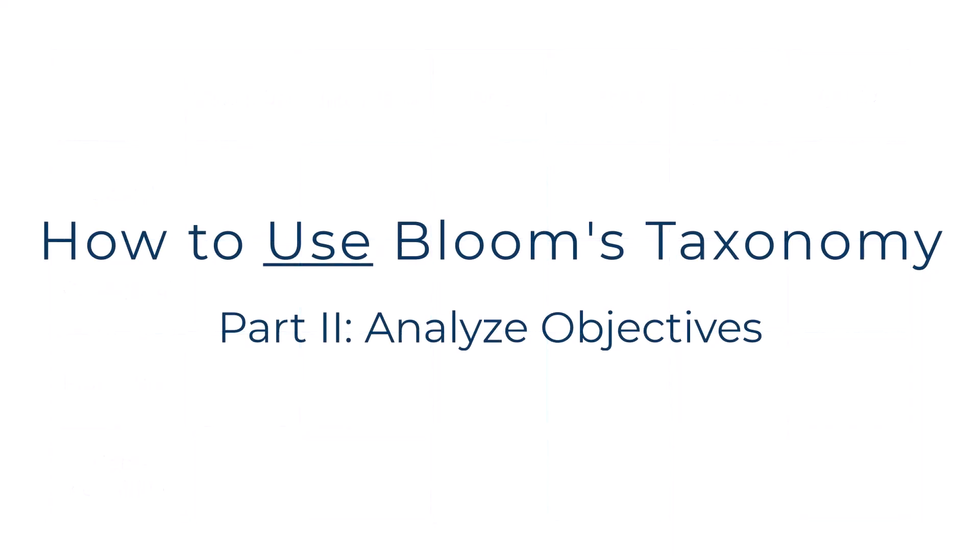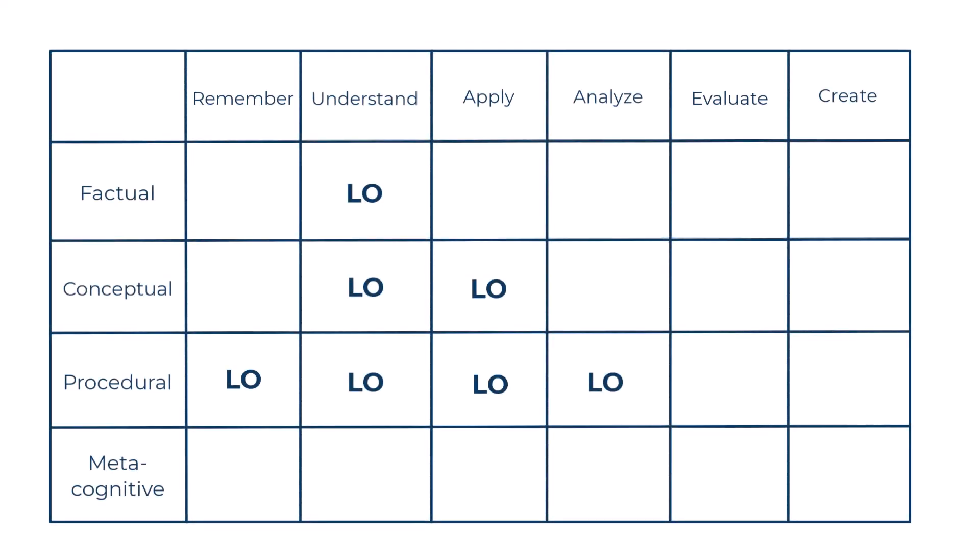Once they are all placed on the grid, the taxonomy gives us a bird's eye view of two things. One, we get to see what type of learning we are emphasizing in the course. For example, if the course is about bicycle repair, the majority of the objectives would be expected to fall under the processing levels understand and apply, and the knowledge types of conceptual knowledge and procedural knowledge. This allows us to assess whether or not the objectives align with the intended instruction. If your objective isn't where you want it to be, this will help you find a more accurate verb or noun to inform the design of your activities.